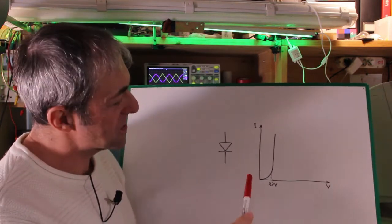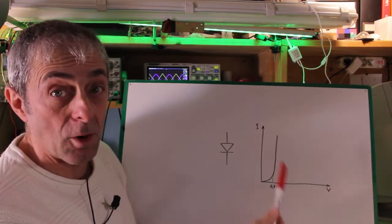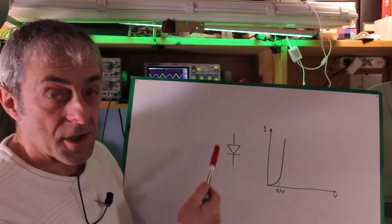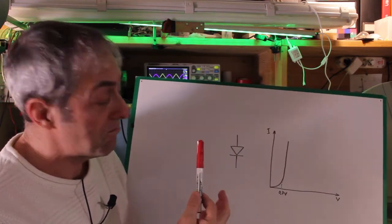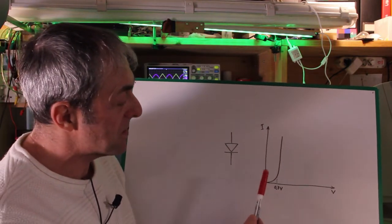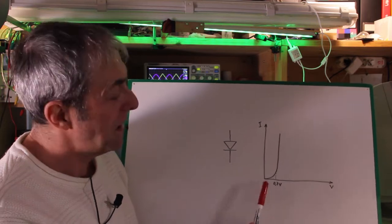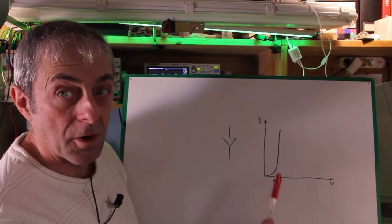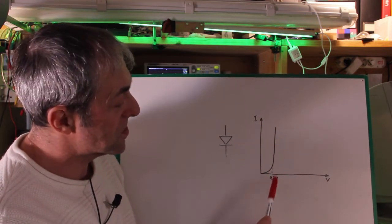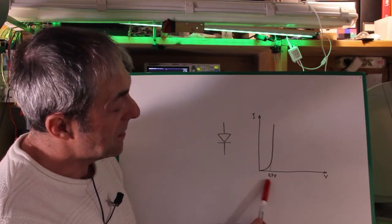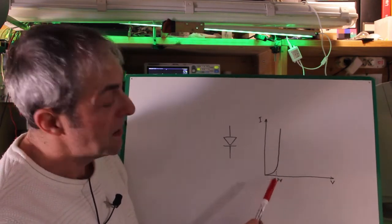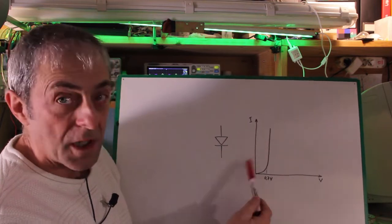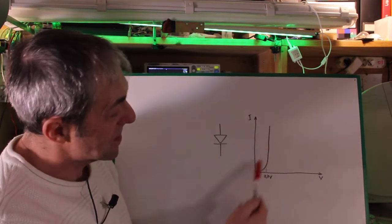Basically it exploits the non-linear characteristics of diodes. As you will know, the current flows through the diodes in only one direction, but this doesn't happen abruptly starting from 0V. It requires some voltage to overcome the junction's voltage drop. Typically it is 0.7V for silicon diodes. And the relation between current and voltage is more or less like this curve here.